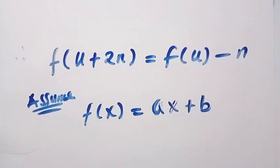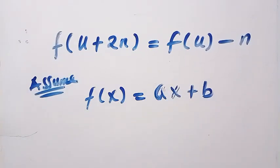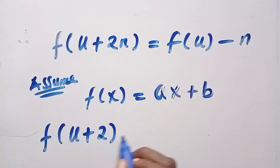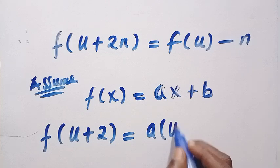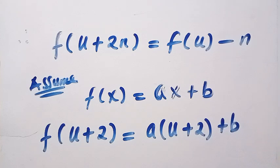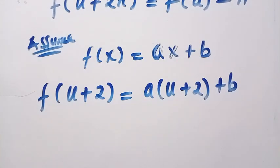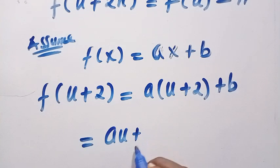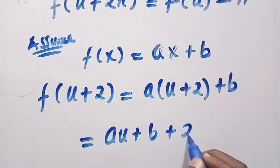Which shows the linear pattern. Then we are going to input f(u+2) equals a into bracket of u+2 plus b. As this equals au plus b plus 2a.